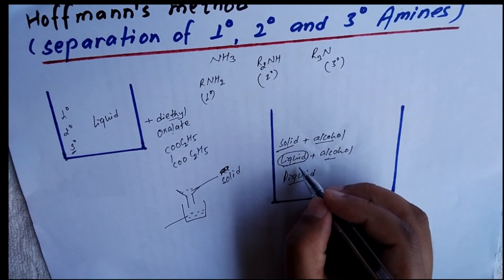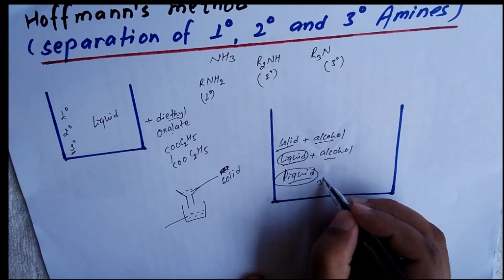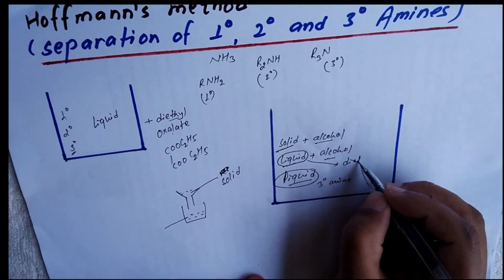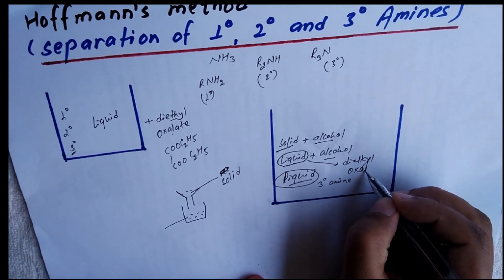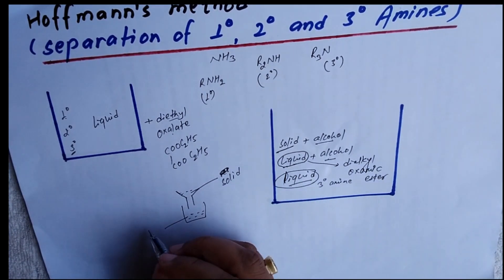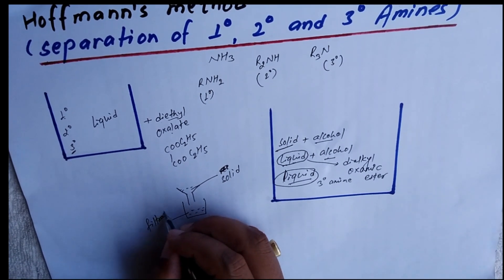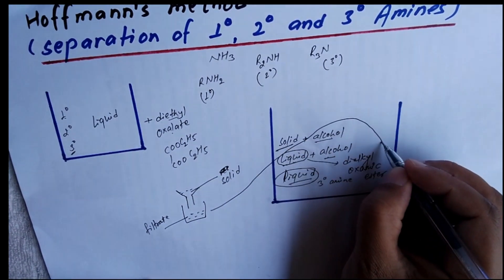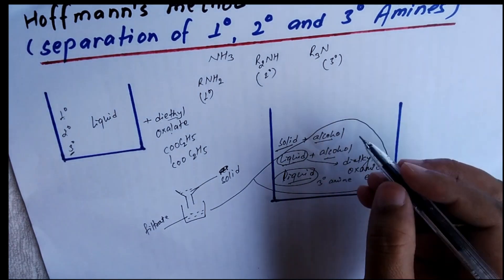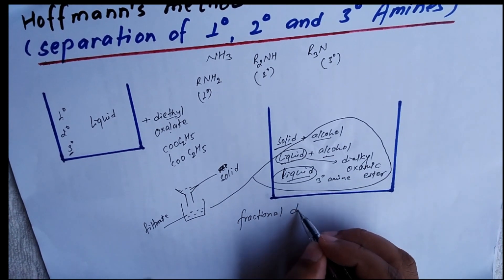In the filtrate, the liquid is diethyl oxalamic ester and the other liquid is the third degree amine. The dialkyl oxalamic ester is also present. All these liquids are present in the filtrate, and separation of the liquids is done by fractional distillation.